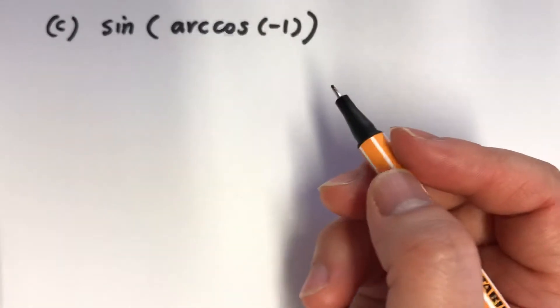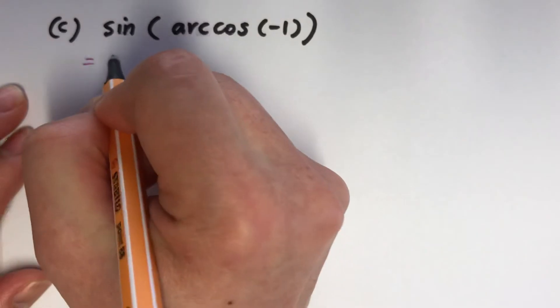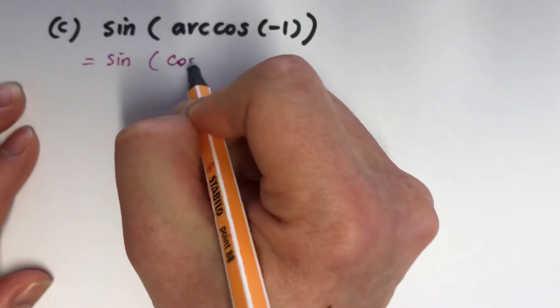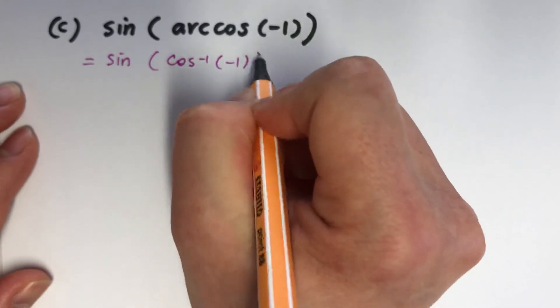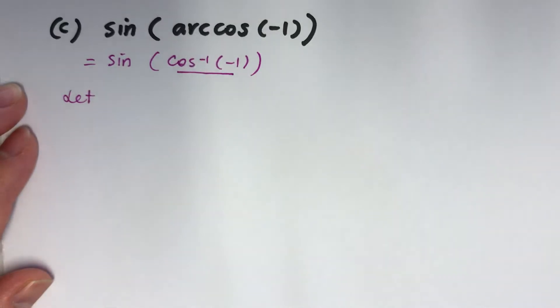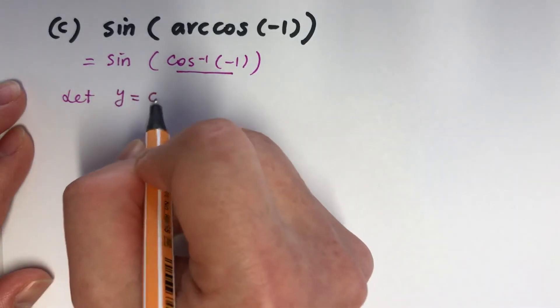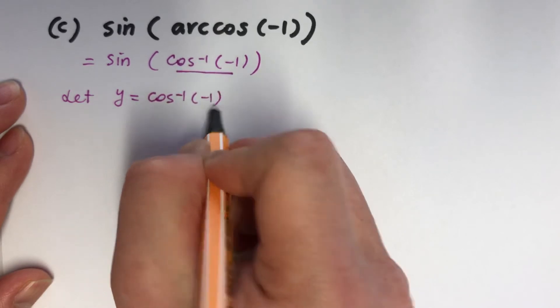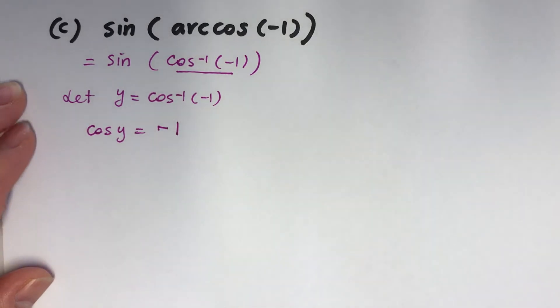This one, I'm going to rewrite this because I like it this way. Let, I'm going to work on this inside first. So let y equals, so this will be cos y equals minus 1.